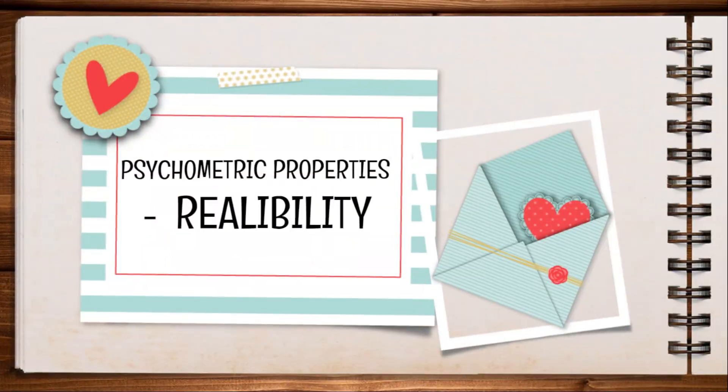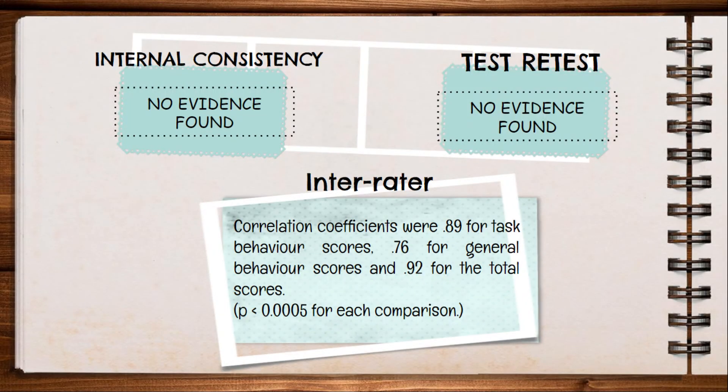For the reliability of OTOS, reliability consists of internal consistency, test-retest, and inter-rater reliability. Both for internal consistency and test-retest reliability, no evidence was found. For inter-rater reliability, correlation coefficients were 0.89 for task behavior scores, 0.76 for general behavior scores, and 0.92 for the total scores.